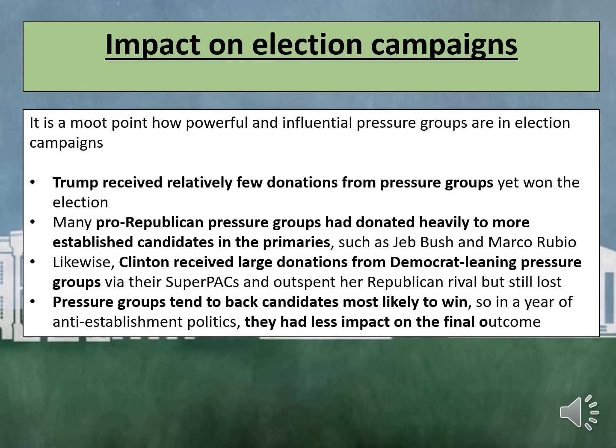It is a moot point how powerful and influential pressure groups are in election campaigns. Trump received relatively few donations from pressure groups yet won the election. Many pro-Republican pressure groups had donated heavily to more established candidates in the primaries, such as Jeb Bush and Marco Rubio. Likewise, Clinton received large donations from Democrat-leaning pressure groups via their super PACs and outspent her Republican rival, but still lost. Pressure groups tend to back candidates most likely to win, so in a year of anti-establishment politics, they had less of an impact on the final outcome.